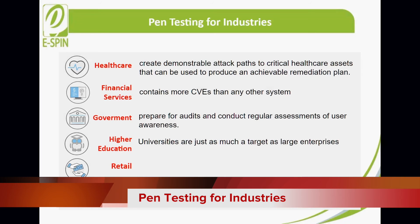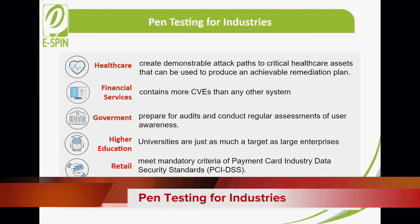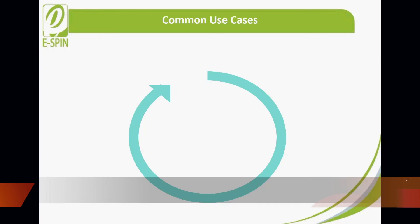Higher education — universities are just as much a target as large enterprises. See how faculty, staff, and students fare against attacks and educate them as needed. Retail — people trust retailers every day to carry out transactions while keeping their information safe. Core Impact will help maintain that trust and meet mandatory criteria of Payment Card Industry Data Security Standard (PCI DSS). Energy and utilities — numerous regulations like NERC CIP surround energy and utility companies. Core Impact can not only prove compliance but also show if you are truly protected.